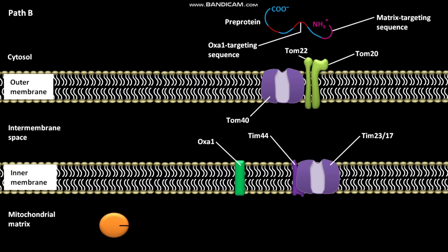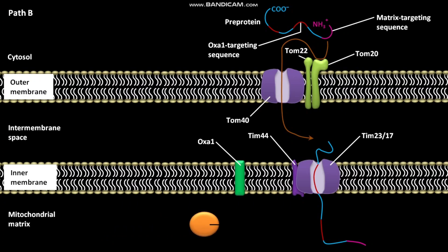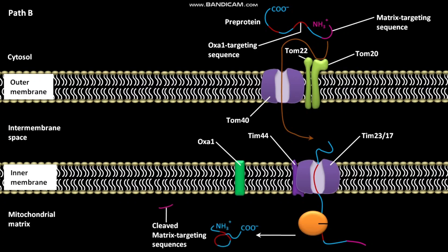In path B, the N-terminal targeting sequence of the pre-protein is recognized by TOM20 and TOM22 import receptor. The pre-protein is then transferred through the TOM40 general import pore to the intermembrane space. From the intermembrane space, the pre-protein is translocated through TM23 and TM17 translocation complex to the mitochondrial matrix. During this translocation, HSC70 present in the mitochondrial matrix binds to the pre-protein and cleaves the matrix targeting sequence, forming an intermediate protein and a cleaved matrix targeting sequence.